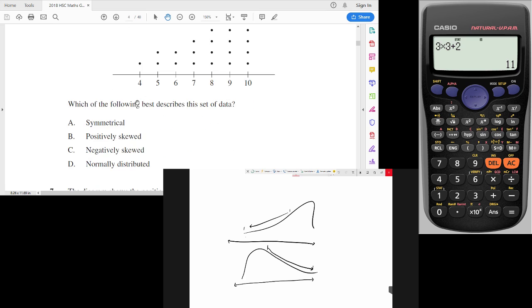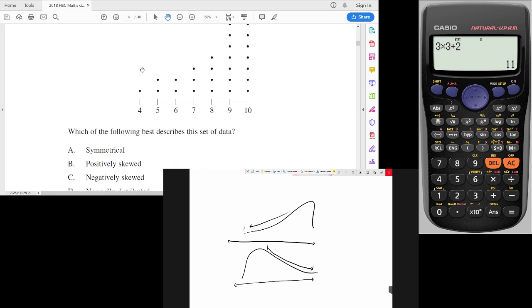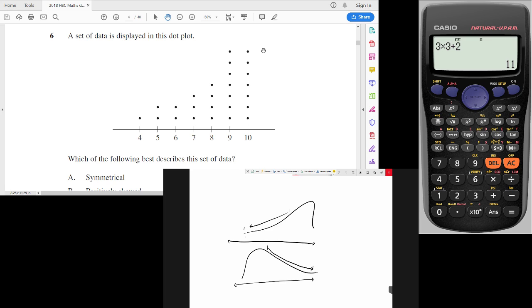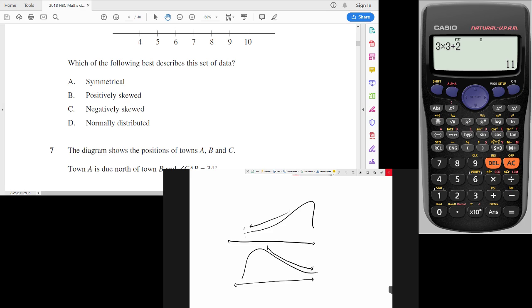So is this one positively skewed or negatively skewed? Well, more of the data is towards the right, that is that it makes a tail towards the end where the data is more spread out on the left. So that is in fact C, negatively skewed.